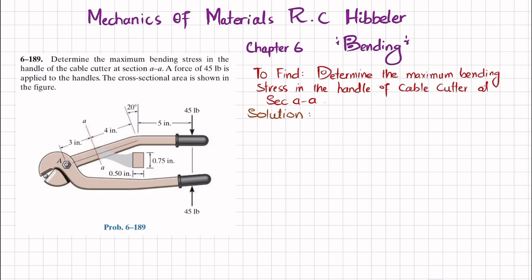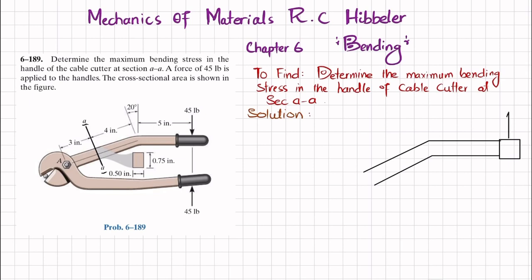Let's start with the solution. When you cut the handle of the cable cutter at section AA and draw the free body diagram — here you can see the handle with a load of 45 pounds acting downward. The length from the load to the vertical line is 5 inches, and this angle is 20 degrees as shown in the figure.